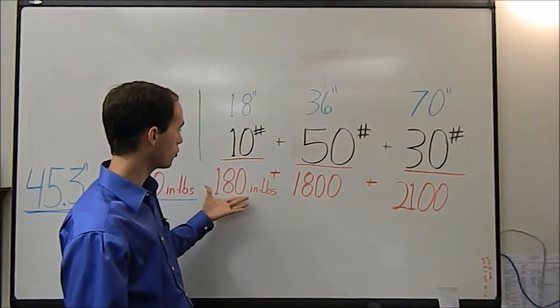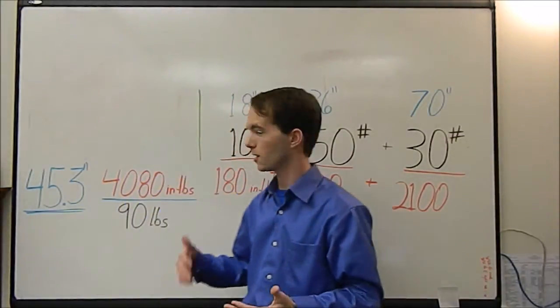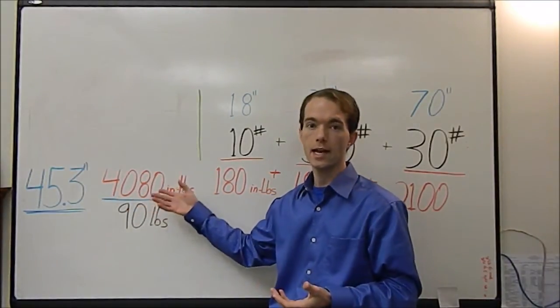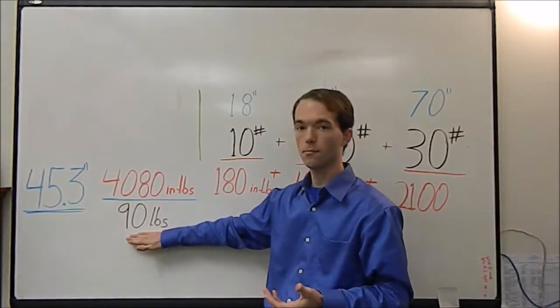So then you take all your moments, 180, 1800 and 2100 and you sum them up. Sum of the moments over the sum of the masses. The sum of the moments in our case is 4080 inch-pounds.